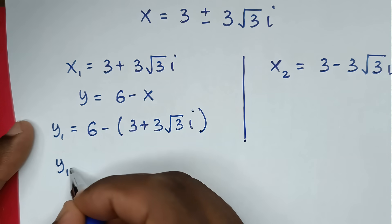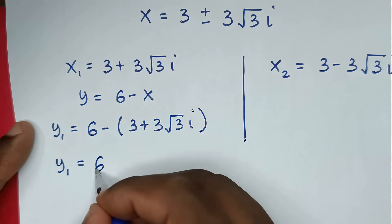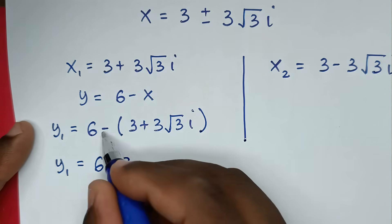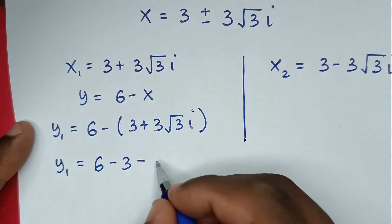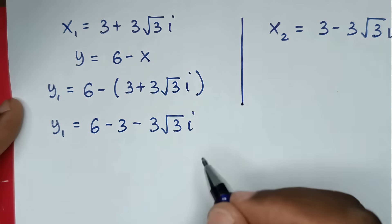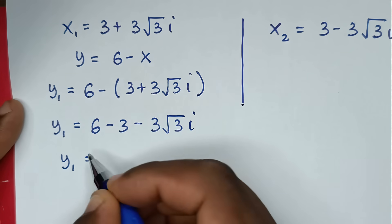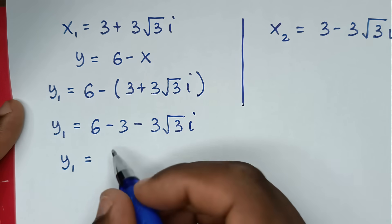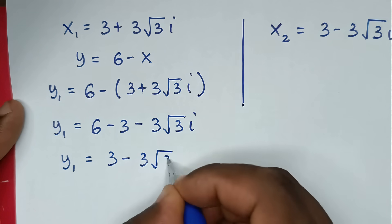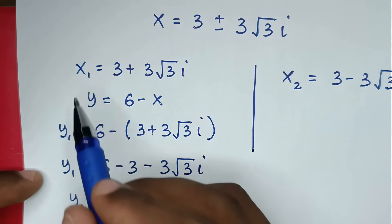So y₁ is equal to 6 minus 3 minus 3 square root of 3i. Therefore y₁ is equal to 3 minus 3 square root of 3i.